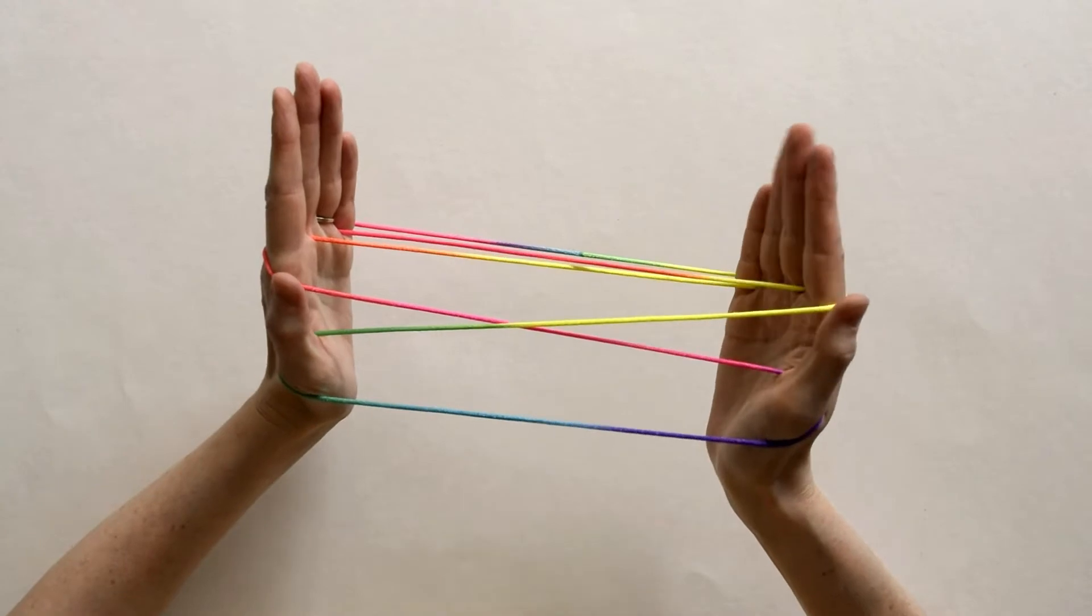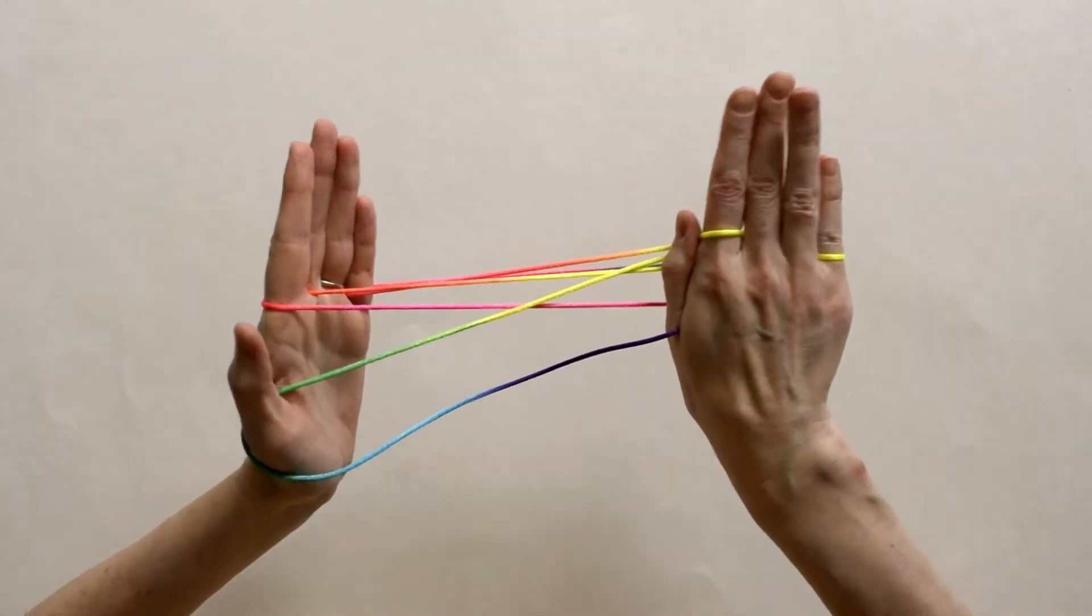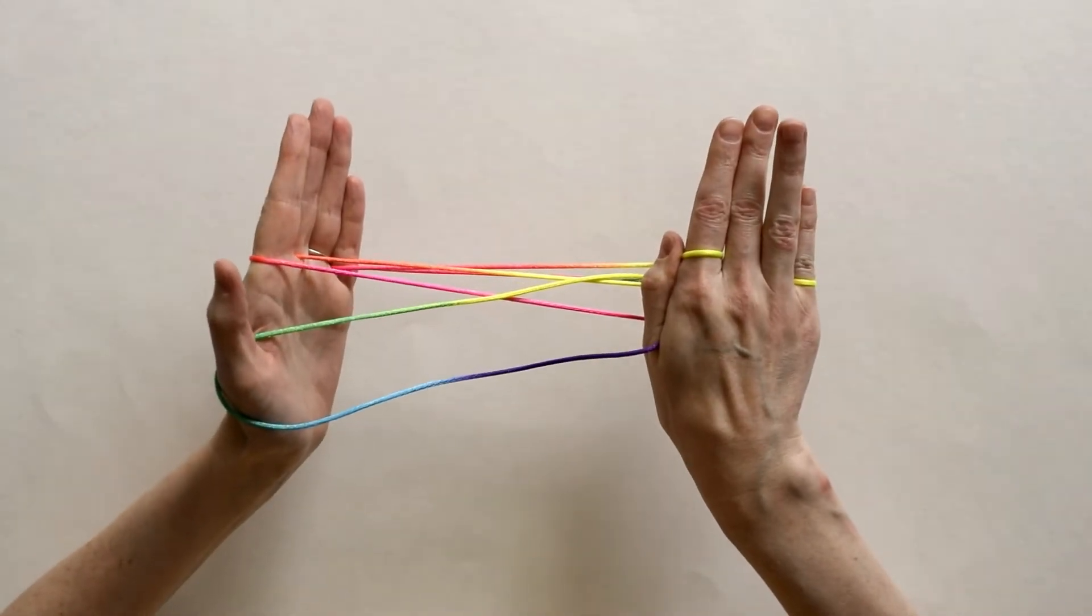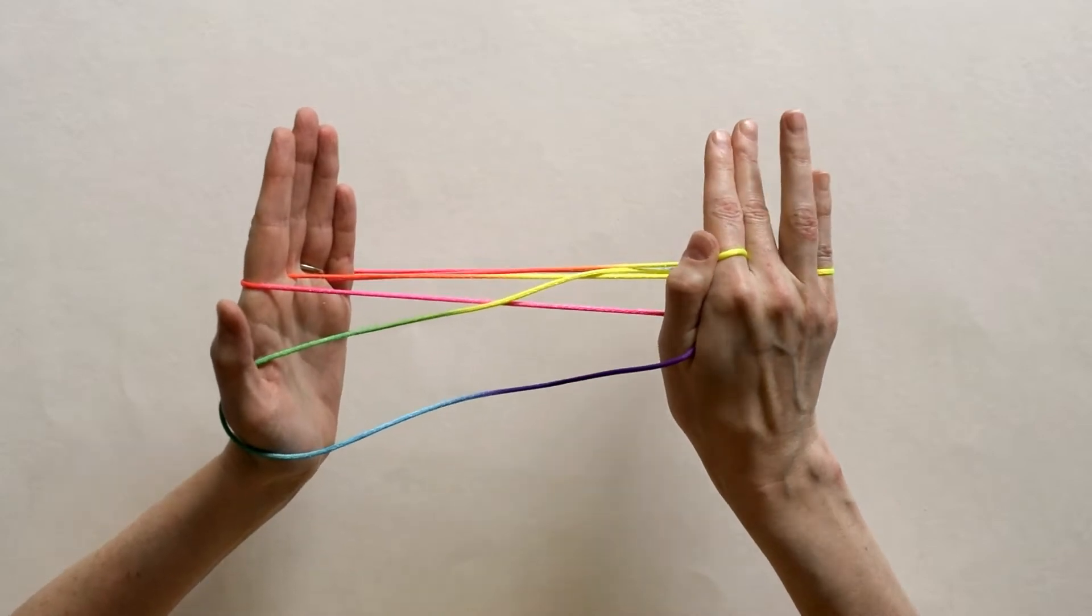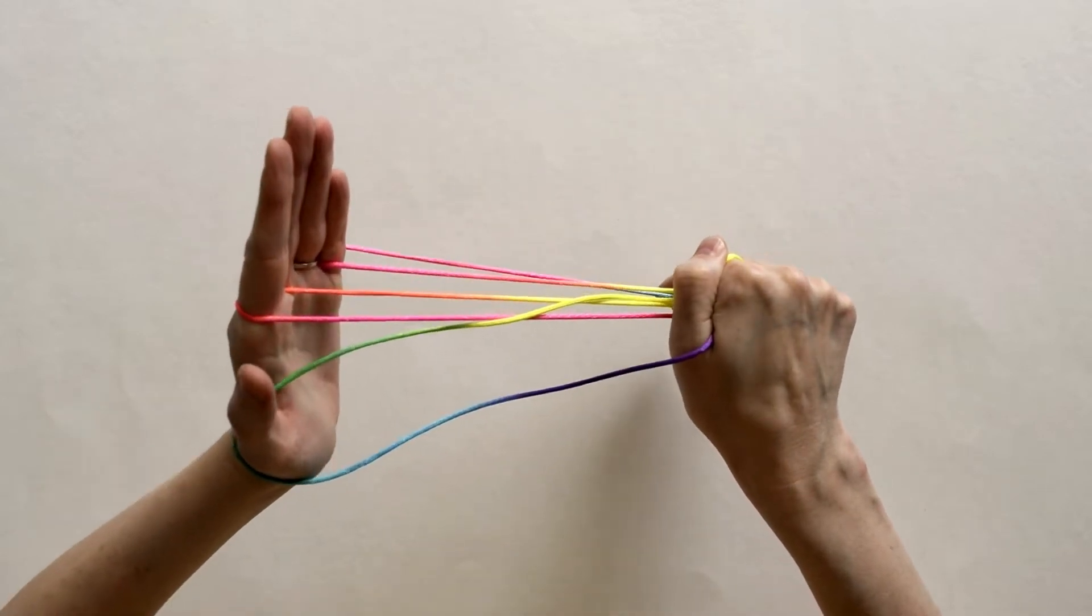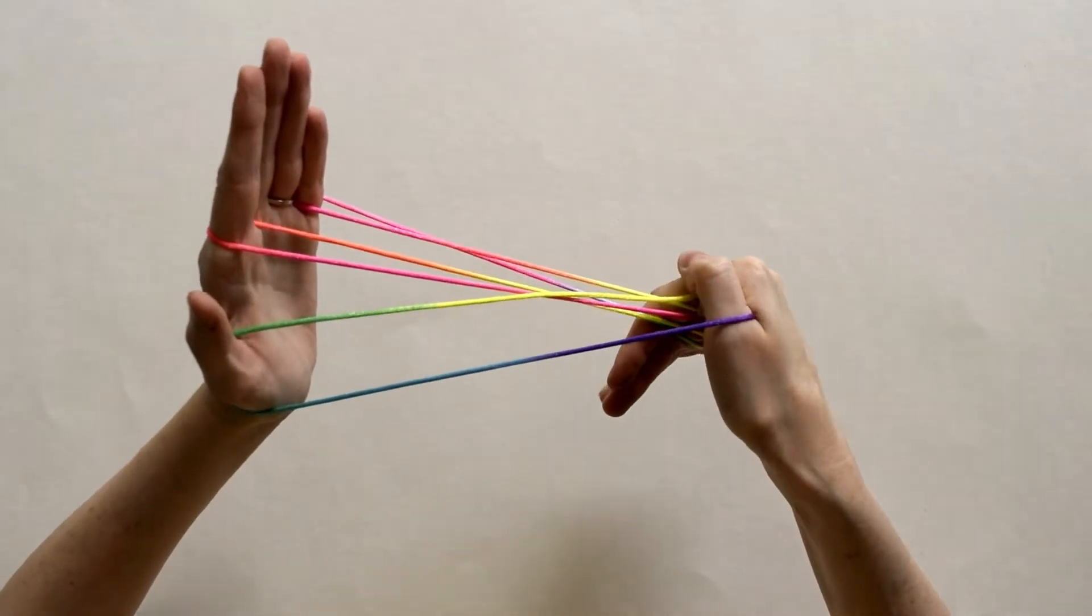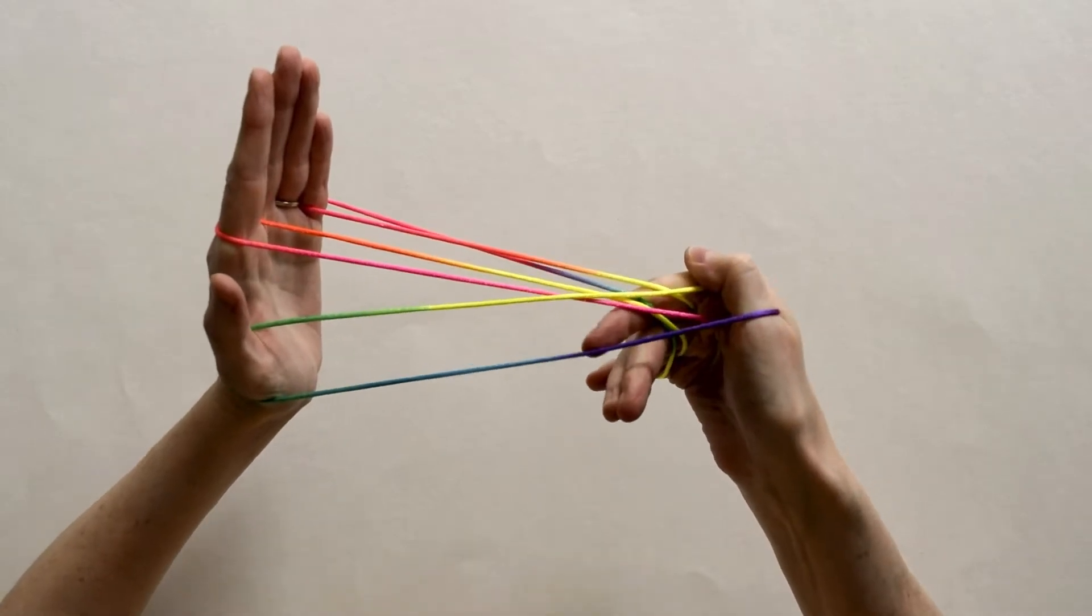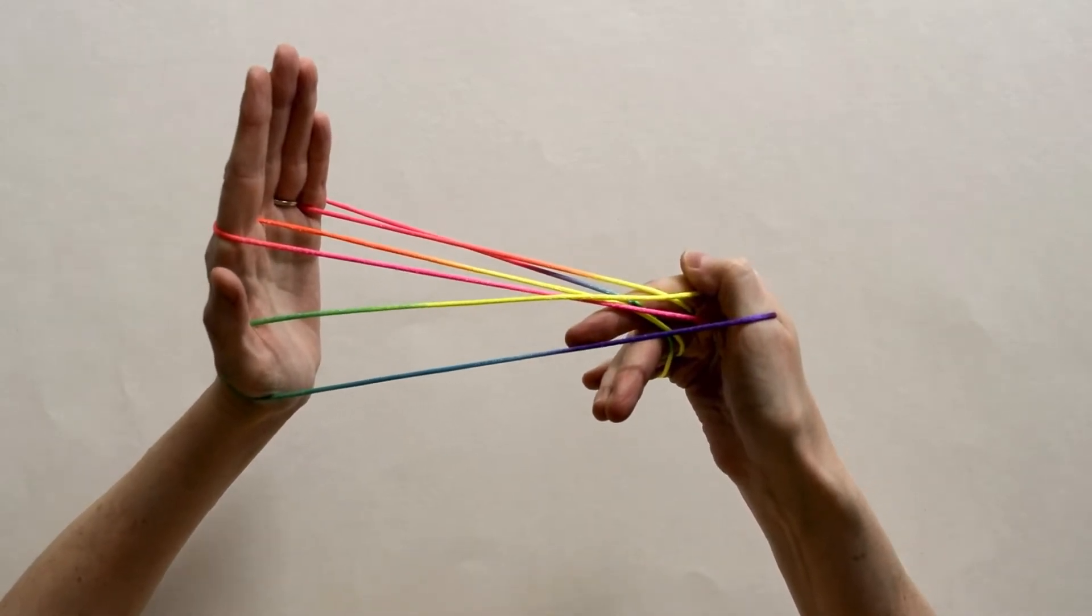Now take your right hand and face it downwards. You're going to twist, bend your fingers inwards towards you, and then twist them sideways. You're going to be going for that closer thumb string.